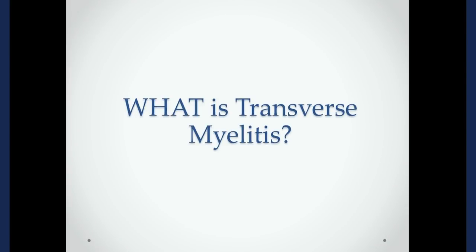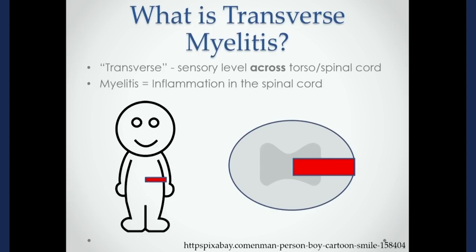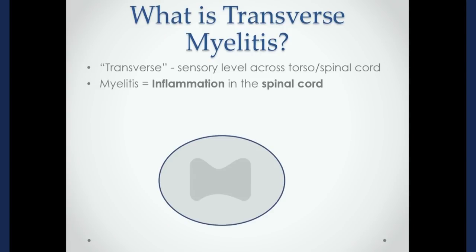So what is transverse myelitis? The person who created this name used the word transverse to describe this sensory level that is often seen going across the torso. Patients often complain of this kind of band of sensory loss or abnormal sensation — that's the transverse piece. The myelitis — literally myelo means spinal cord. Myelitis is inflammation of the spinal cord.